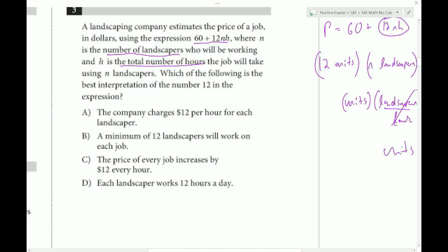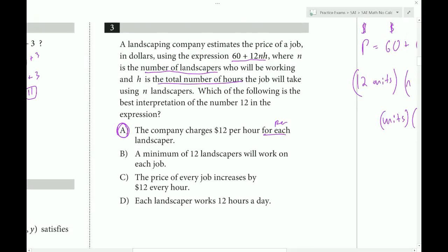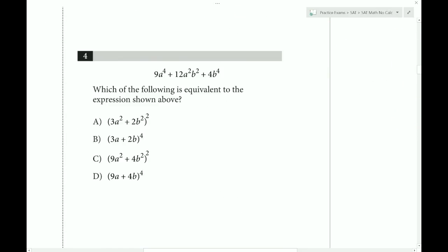Now let's see which choice matches. The company charges $12 per hour for each landscaper. 'For each' also means 'per', so $12 per hour per landscaper. This is exactly what we were looking for.